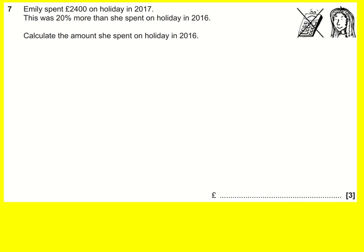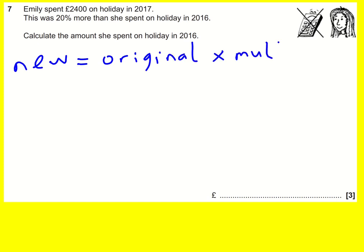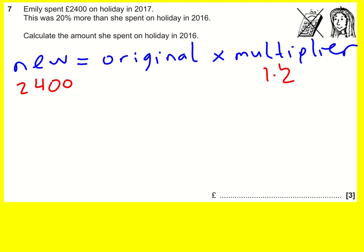I always advise for this sort of question to write down the following formula: New = Original × Multiplier. Then recognize what we're being given. We are given the new value, which is 2400, and we are told that it was 20% more than the original. That means the multiplier is 1.2, and the original is what we want to work out — let's call it X. This is a reverse percentages problem.